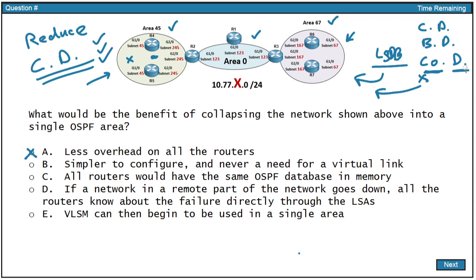Option B: simpler to configure and never a need for a virtual link. That sounds pretty good. It would be very easy to configure all of this in a single area. Virtual links are used to connect a particular area to the backbone if it's not directly connected — they're a band-aid for a design problem. Of course, we wouldn't need a virtual link if we're all in one area.